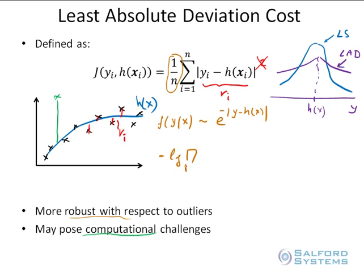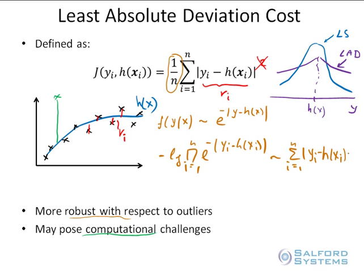If you take the negative log-likelihood of the double exponential distribution, skipping constants, and take the log of the product — applying standard cancellations — you essentially arrive at the summation from i=1 to n of the absolute value of y_i minus h(x_i). This brings us back to the LAD cost function j. The double exponential distribution has thick tails, which is what allows it to better handle the introduction of outliers.